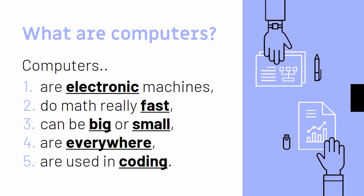So, let's have a review. What are computers? Computers: number one, are electronic machines; number two, do math really fast; number three, can be big or small; number four, are everywhere; number five, are used in coding.